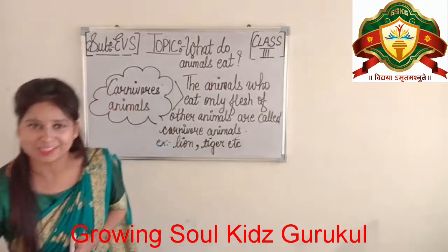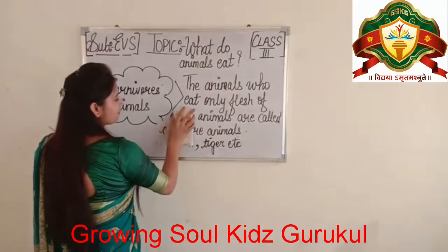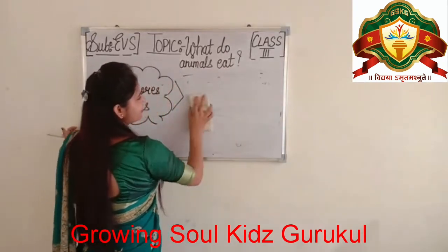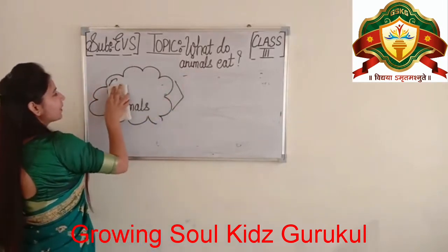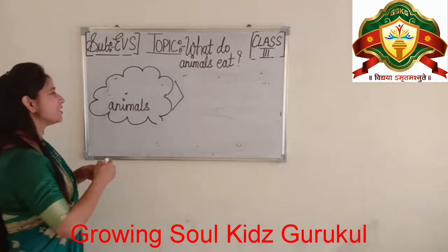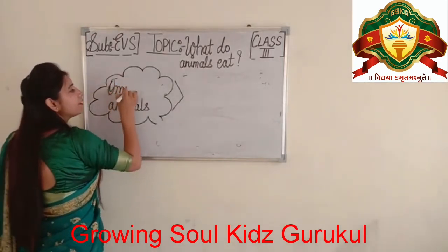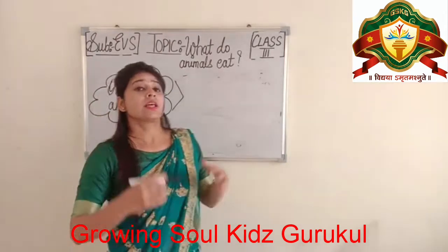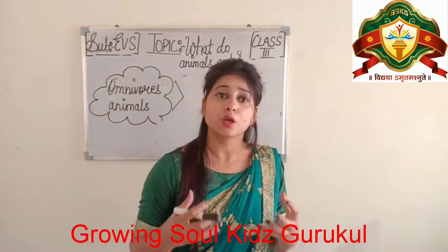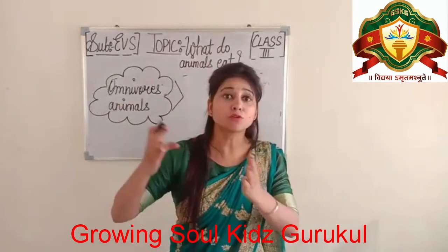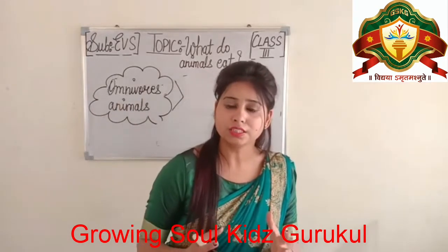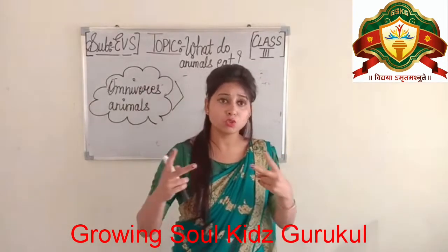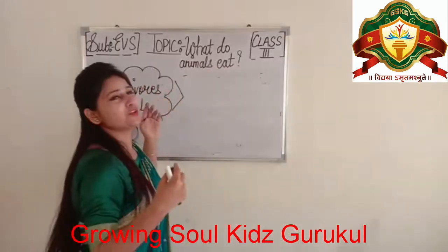Let us move on to the last one. The last type is omnivore animals. The animals that eat both plants and flesh of other animals are called omnivore animals.